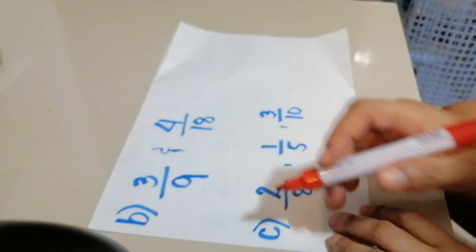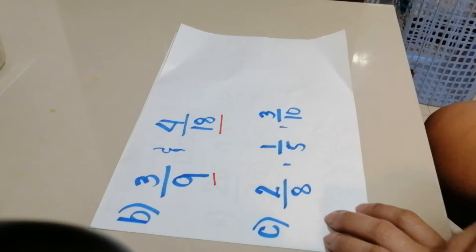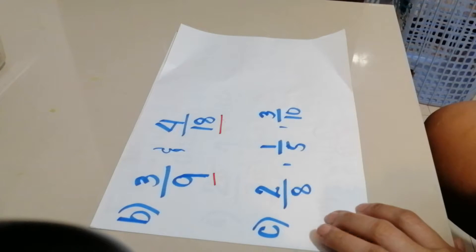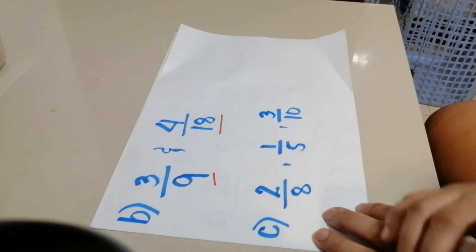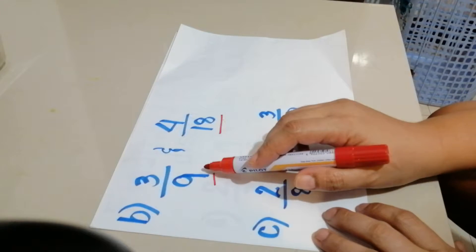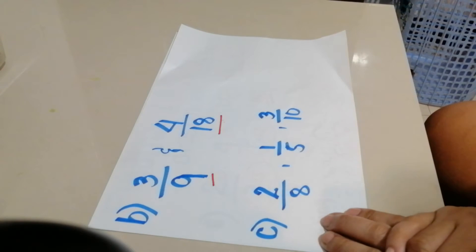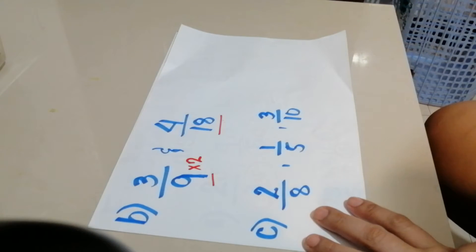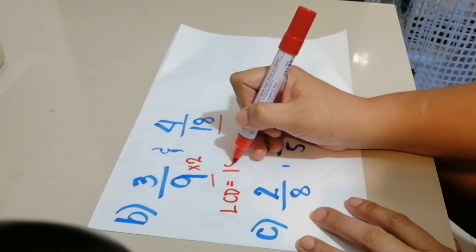If we use listing, take note that 9 and 18 — 18 is a multiple of 9. So instead of multiplying anything to 18, you just multiply 9 by 2 to make the denominators the same. Therefore, the LCD is equal to 18.